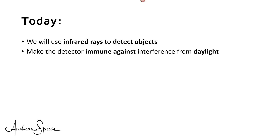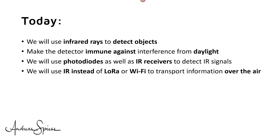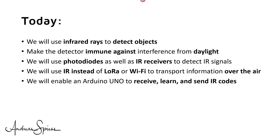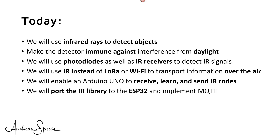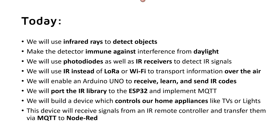And find a way to make the detector immune against interference from daylight. We will use standard photodiodes as well as IR receivers to detect signals and see the difference. Then we will use infrared instead of LoRa or Wi-Fi to transport information over the air. We will enable an Arduino Uno to receive, learn and send infrared codes. We will port the IR library to the ESP32 and implement MQTT. Finally, we will build a device which can control our home appliances like TVs or lights.